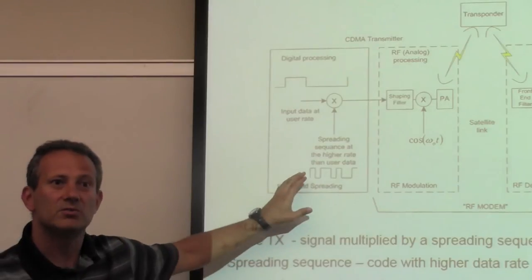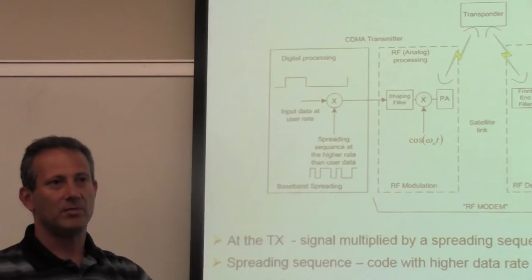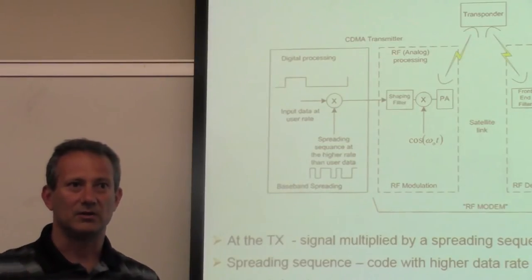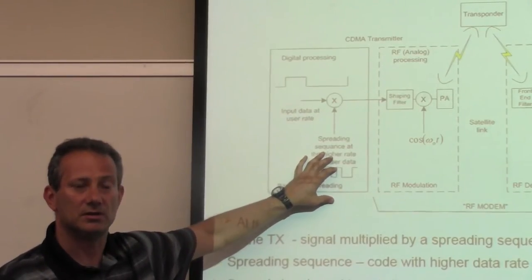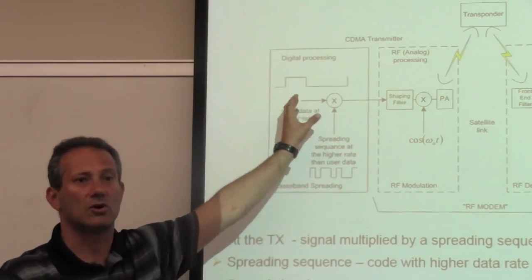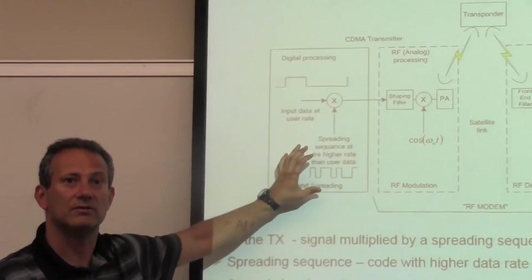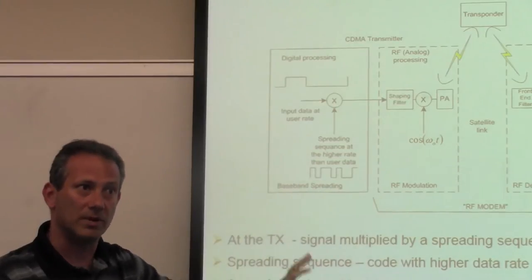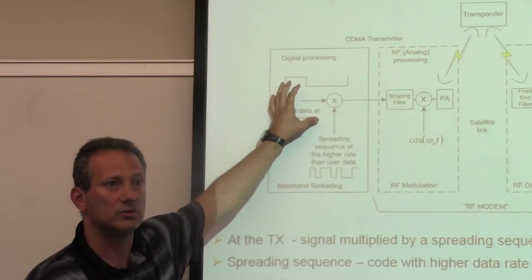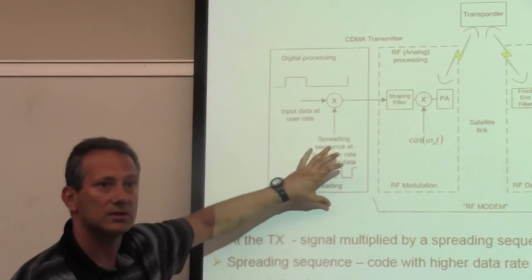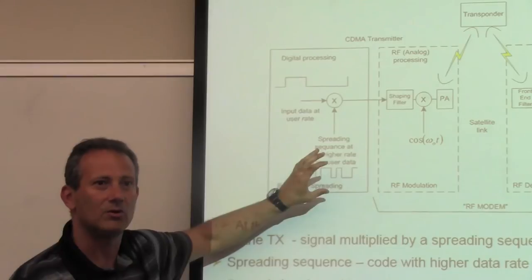Why do we do that? At the bit rate, everybody talks the same language — you're sending bits from one end to the other. By multiplying with a specific sequence, you're making this autonomous from every other signal that is out there. These sequences have a special property of orthogonality. Just remember that you have your bit rate — what you're trying to send — and you multiply it with a sequence of a much higher rate. To distinguish between bit rate and this higher rate, we call the smaller bits 'chips,' so we have a chip rate. The ratio of chip rate to bit rate is important.